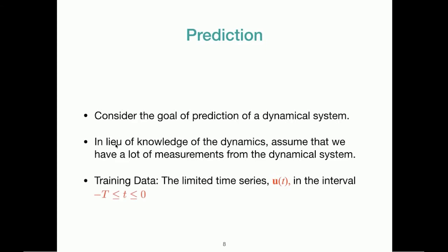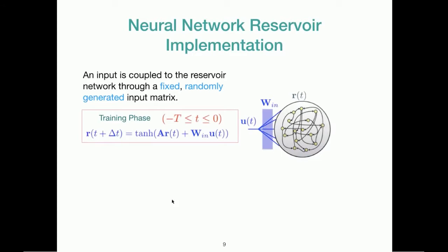Now consider the goal of prediction of a dynamical system. In lieu of knowledge of the dynamics, we don't know the equations of the dynamical system, but we assume that we have a lot of measurements from the dynamical system in the form of limited time series vector u of t in the interval minus capital T to zero, and this is what we call the training data. What we will do is we are going to couple the input u of t to the reservoir through a fixed randomly generated input matrix W_in. During the training phase the reservoir will evolve according to this equation. As you can see here the dynamics of the reservoir is dictated by self-interactions due to this term and due to external input forcing due to this term. And you have a hyperbolic tangent function which makes the dynamics non-linear.